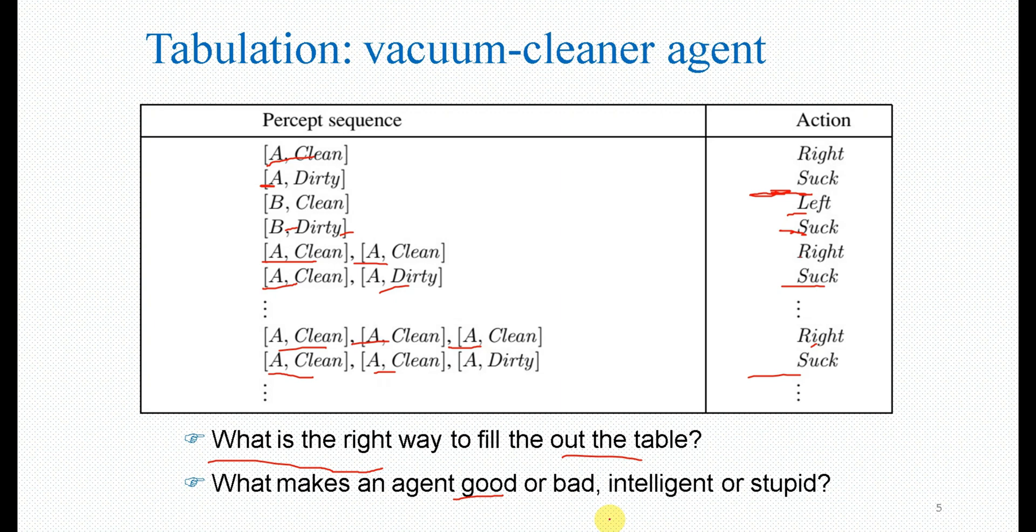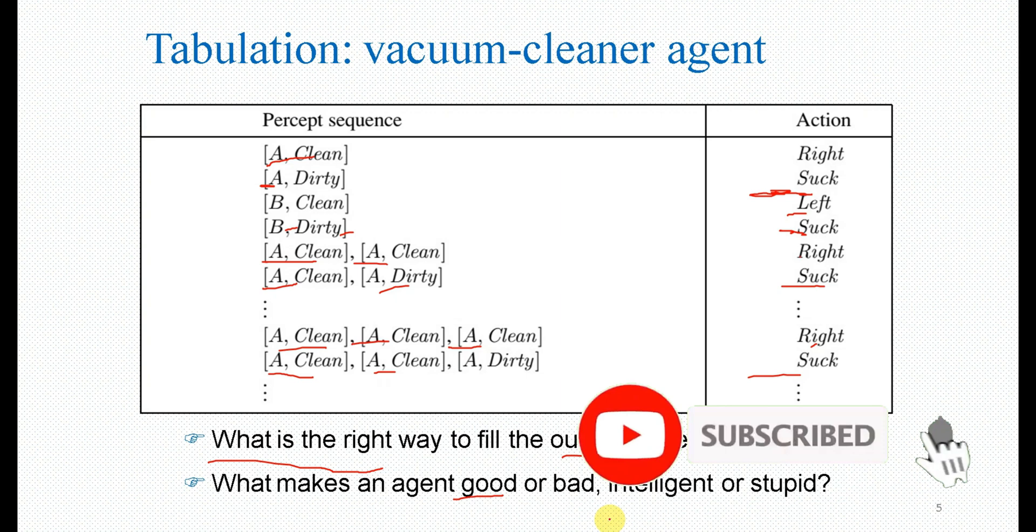Ultimately, what makes an agent good or bad, intelligent or stupid, is the ability to achieve its goals. An agent that is good or bad, intelligent or stupid - an agent that has the ability to consistently achieve its goals is a good agent, an intelligent agent. An agent that is able to achieve its goals is good and intelligent. An agent that cannot achieve its goals is a bad agent, a stupid agent.